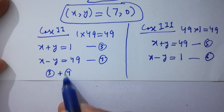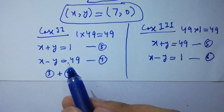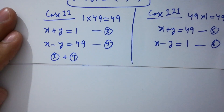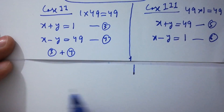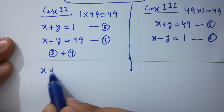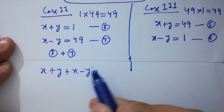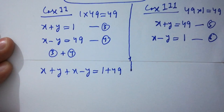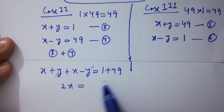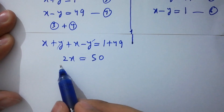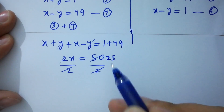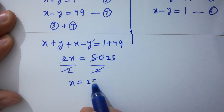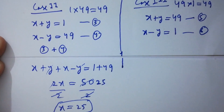Adding the third and fourth equations: x plus y plus x minus y equals 1 plus 49. The y terms cancel, giving 2x equal to 50. Dividing by 2 on both sides, we get x equal to 25.